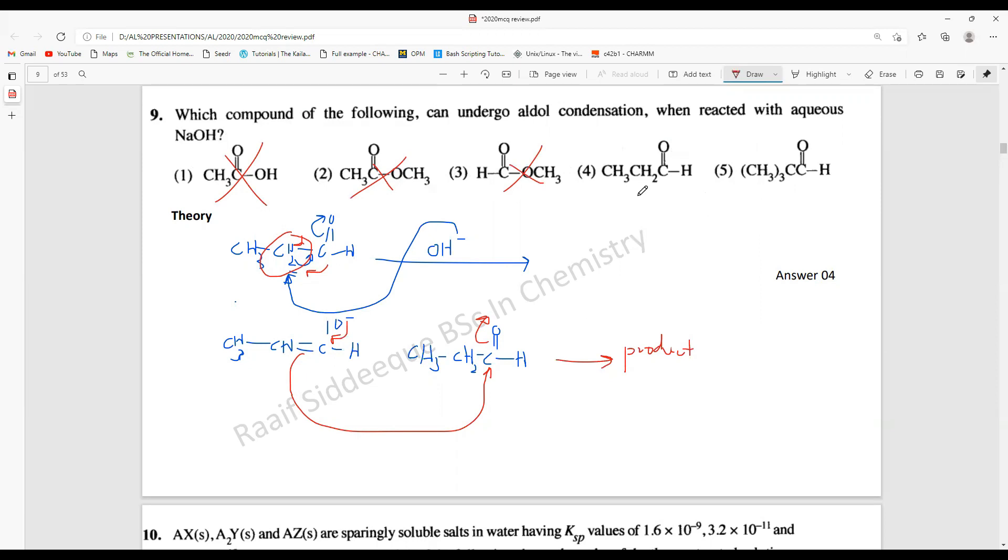I have only two aldehydes here. For this particular aldehyde carbon there are no alpha hydrogens. However, here there are two alpha hydrogens, so the answer is pretty straightforward. If you know the theory it will not take like two seconds to answer this.